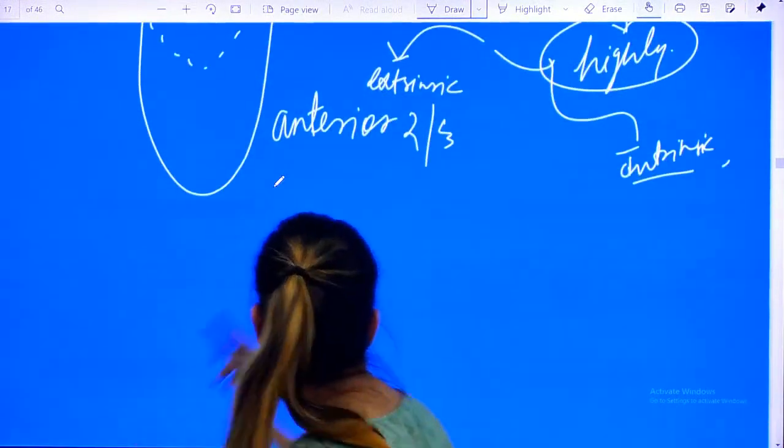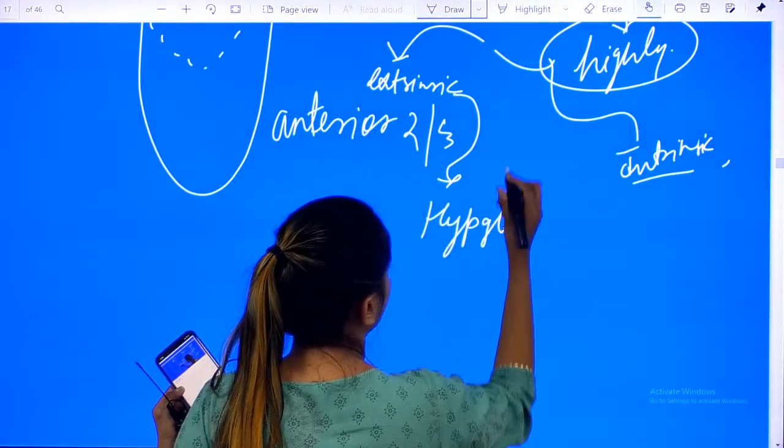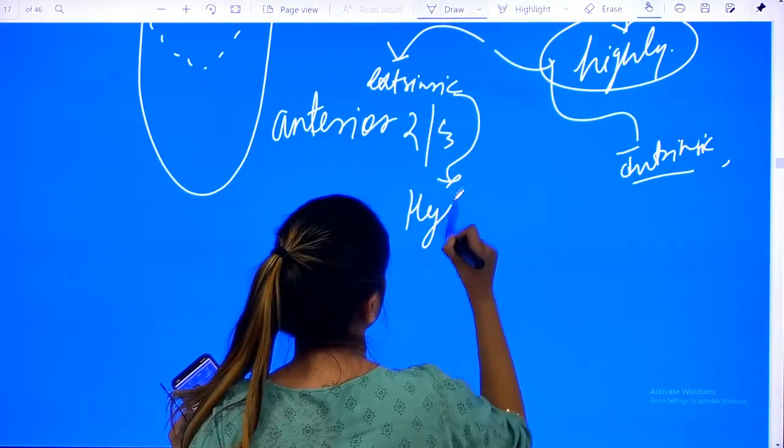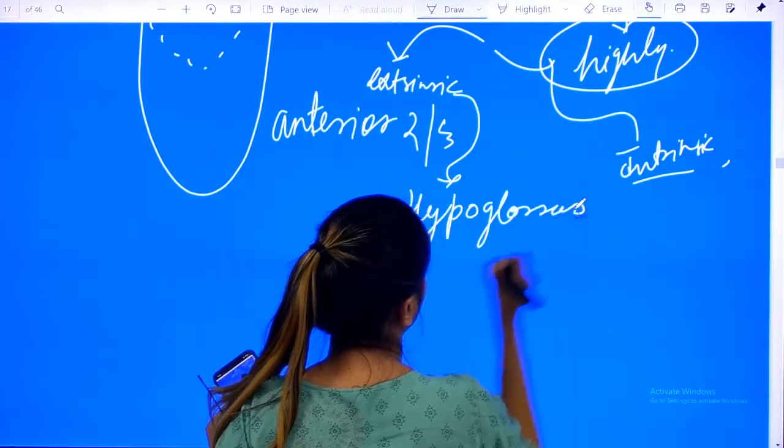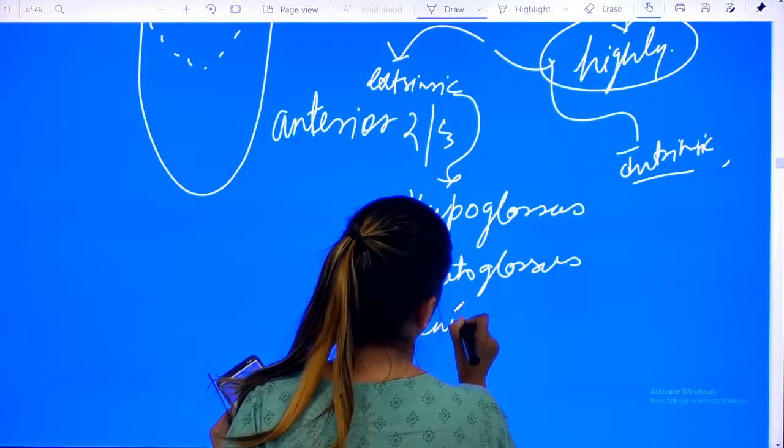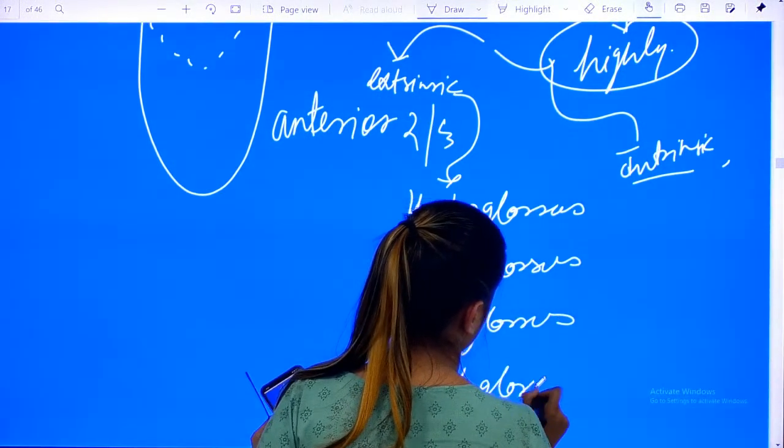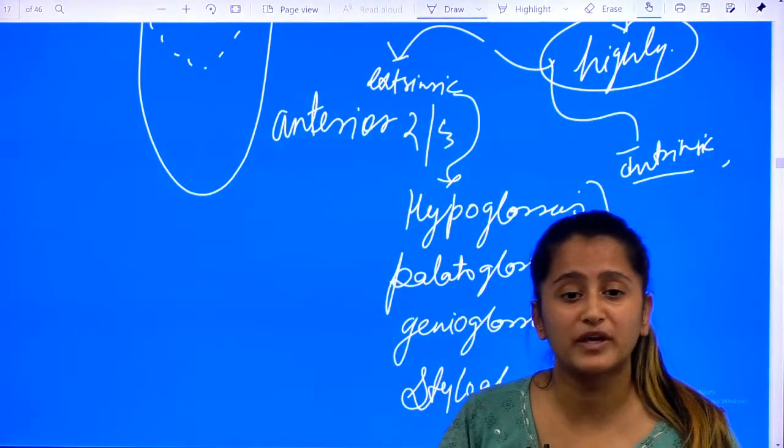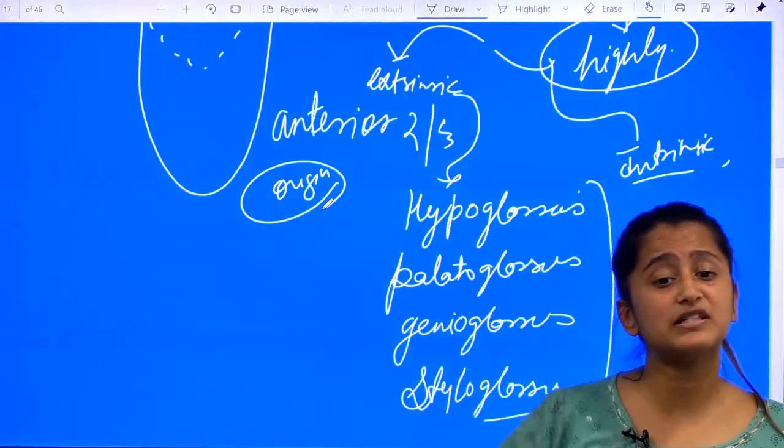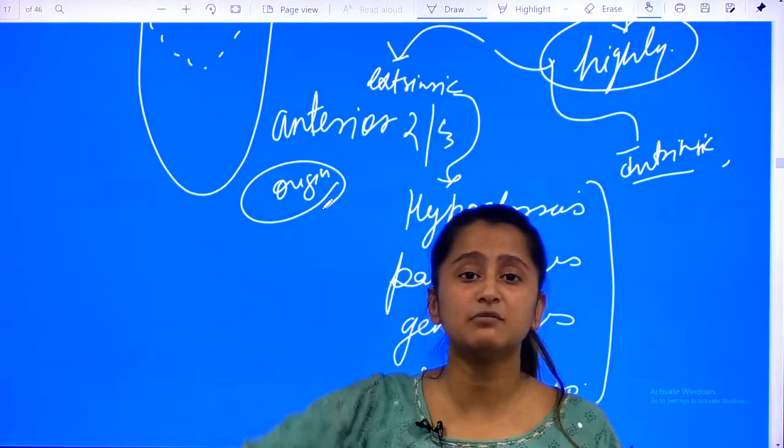Let me tell you about the extrinsic muscles. There are basically four or five types of muscles which include hypoglossus, palatoglossus, genioglossus, and styloglossus. What difference between extrinsic muscles and intrinsic muscles is that the origin of extrinsic muscles is other than the tongue.